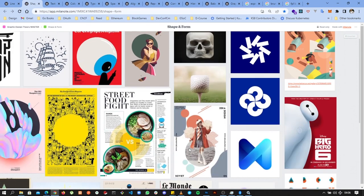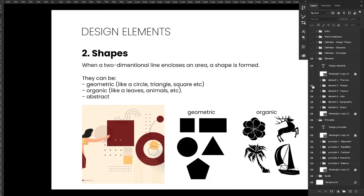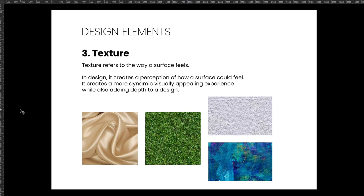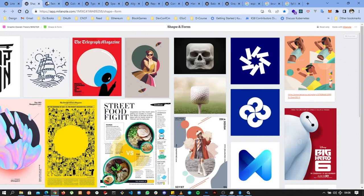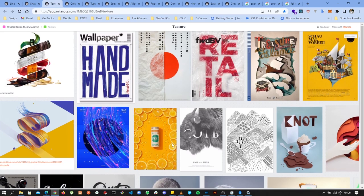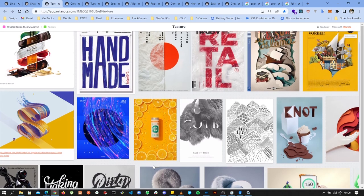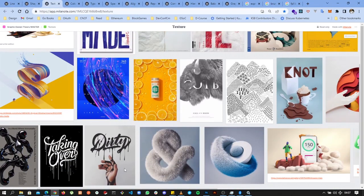The next design element is texture. Texture refers to the way a surface feels, and in design it creates a perception of how a surface could feel. It creates a more dynamic, visually appealing experience while also adding depth to a design. For example, a rough wall or grass texture helps us perceive how the surface feels. Texture is used in designs to add depth and help viewers feel part of the design.